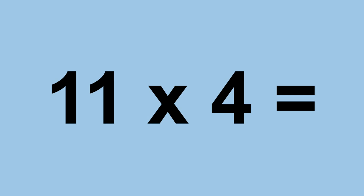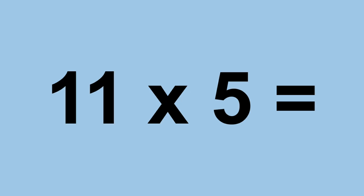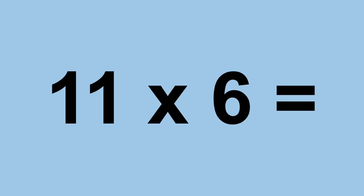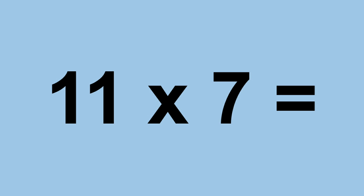Eleven times four equals forty-four. Eleven times five equals fifty-five. Eleven times six equals sixty-six. Eleven times seven equals seventy-seven.